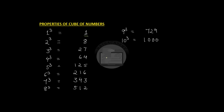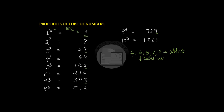So what do we notice here? The cube of one ends with a one, so it's an odd number. The cube of three ends with a seven. The cube of five ends with a five. The cube of seven ends with a three. The cube of nine ends with a nine. One, three, five, seven, nine are all the odd numbers, and we see that their cubes are also odd. So the cube of an odd number is an odd number.